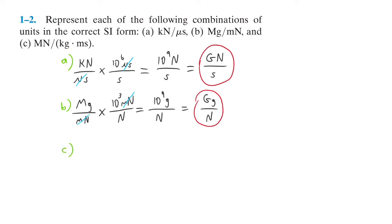Part C, we're given meganewtons over kilograms times millisecond. So we want seconds. For every second there are 10 to the third milliseconds, so those cancel. That leaves us with a meganewton times 10 to the third, which is 10 to the 9th newtons over kilogram second, which is the same thing as a giganewton over kilogram second. And that's the last one.